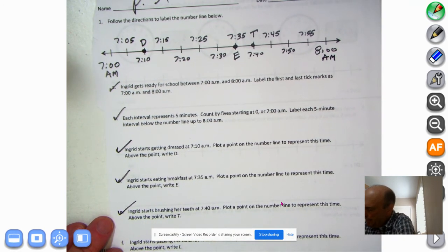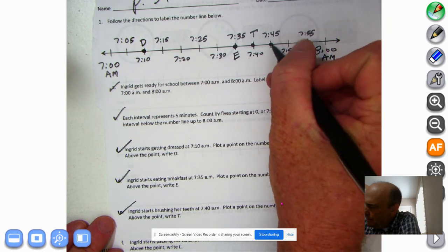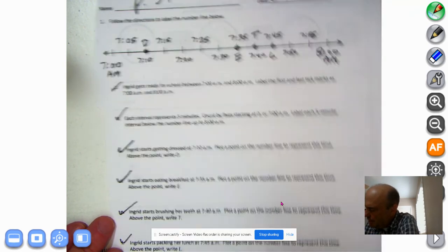Ingrid starts packing her lunch at 7:45 AM. Plot a point on the number line to represent this time. Above the point, write L. So 7:45 right there. Time for her lunch ready.